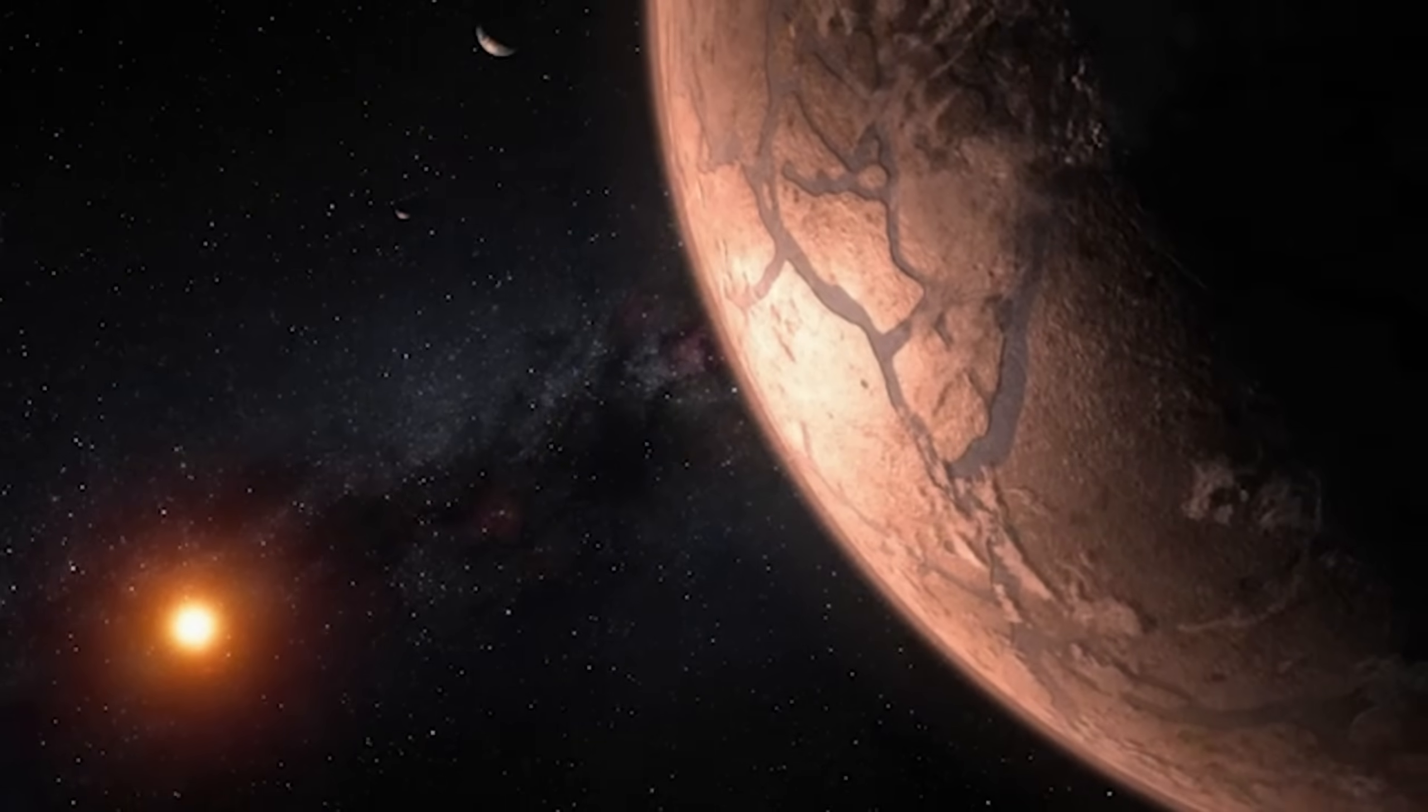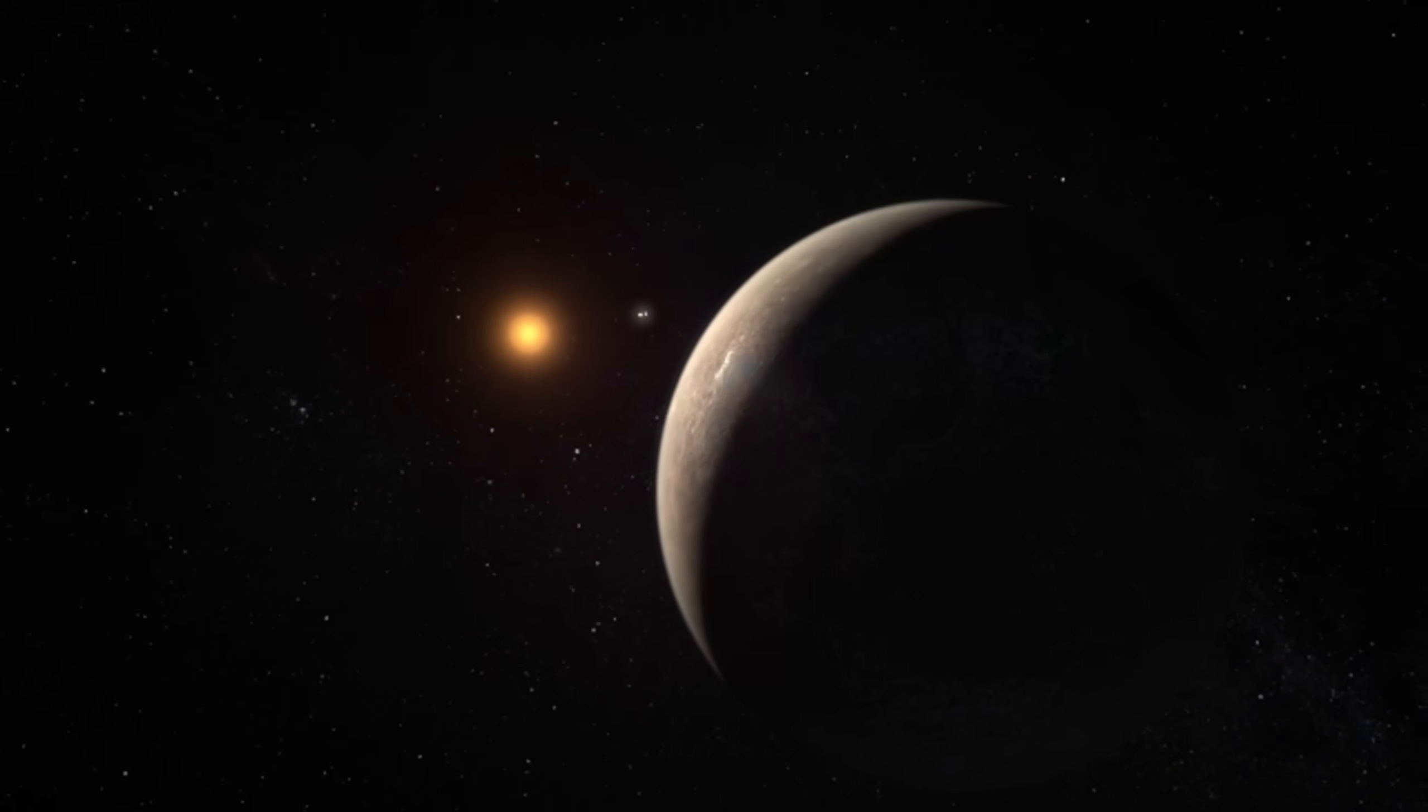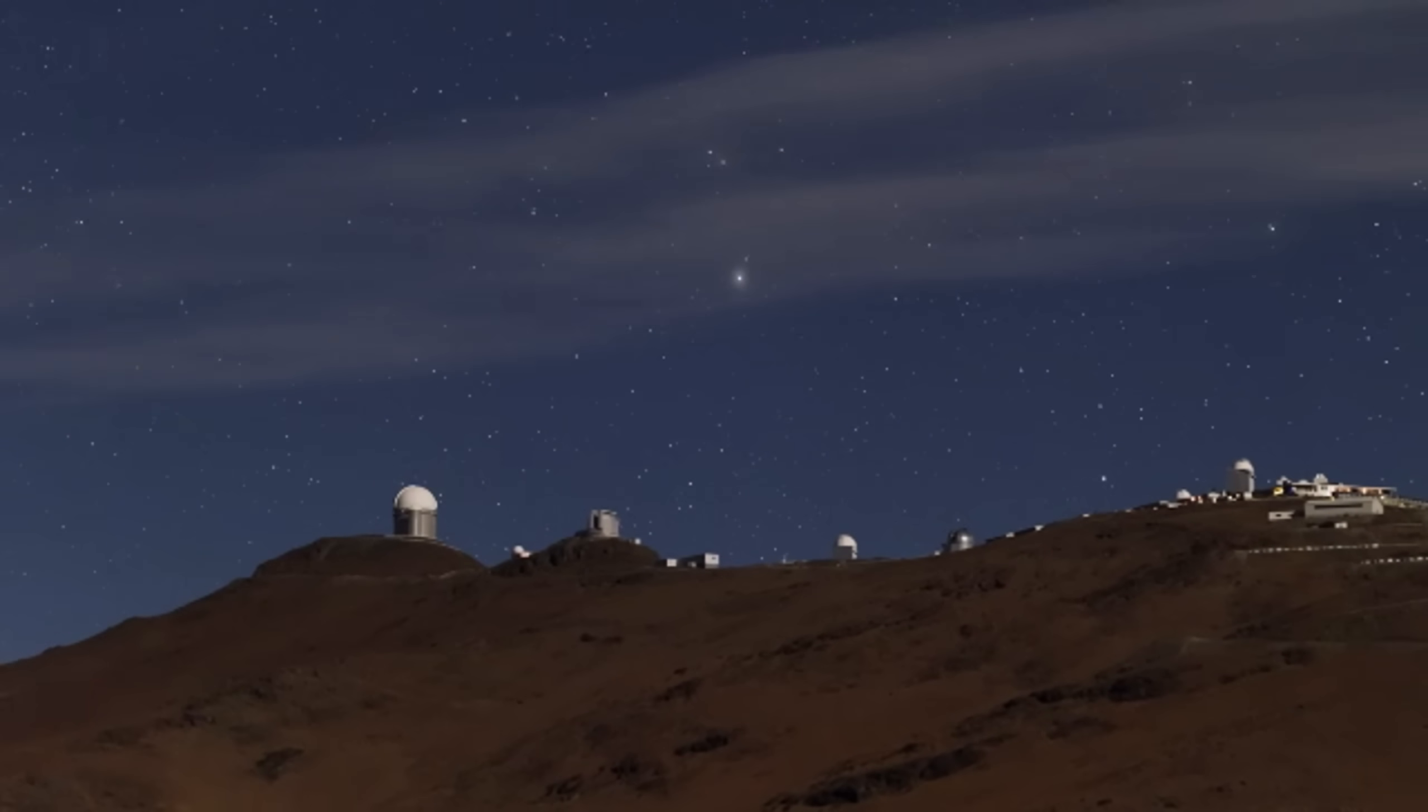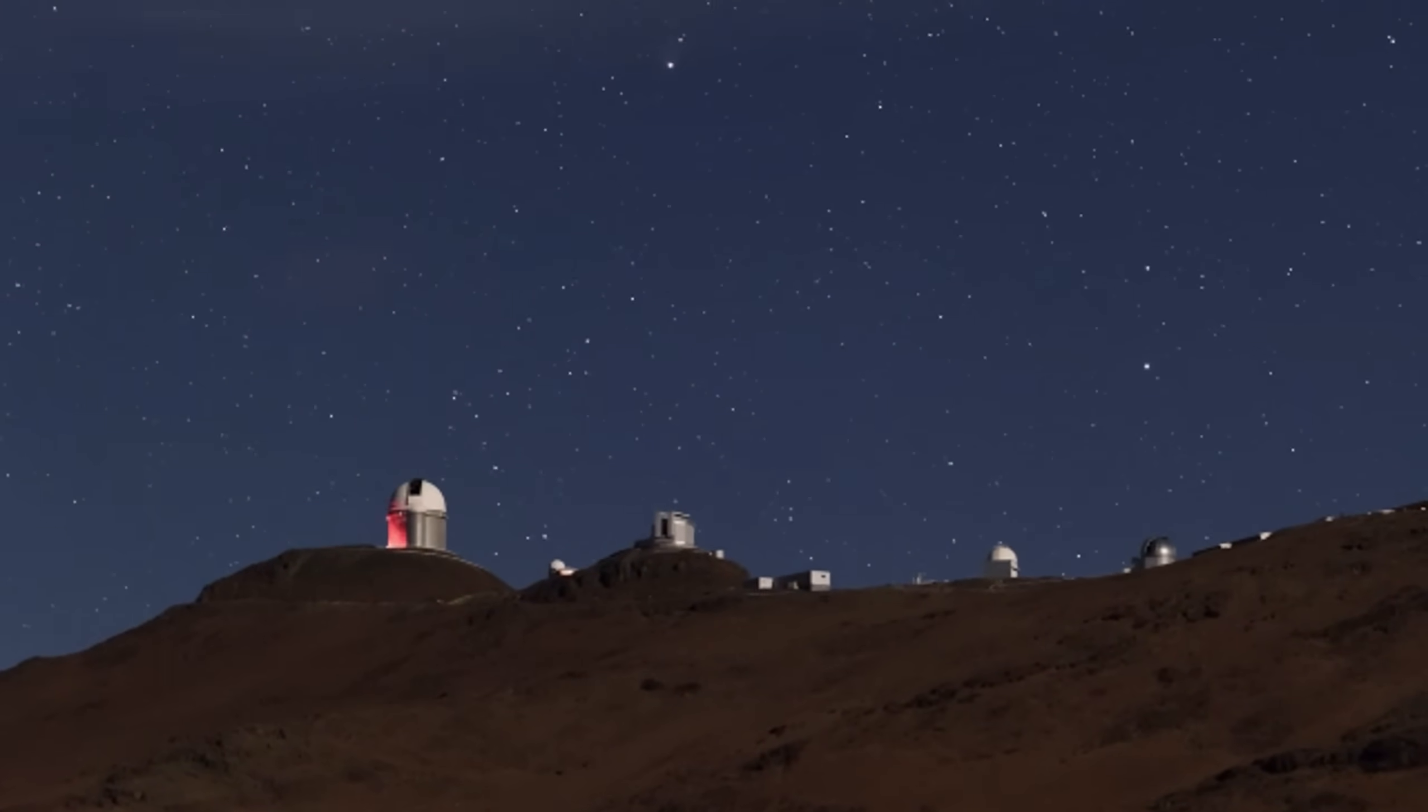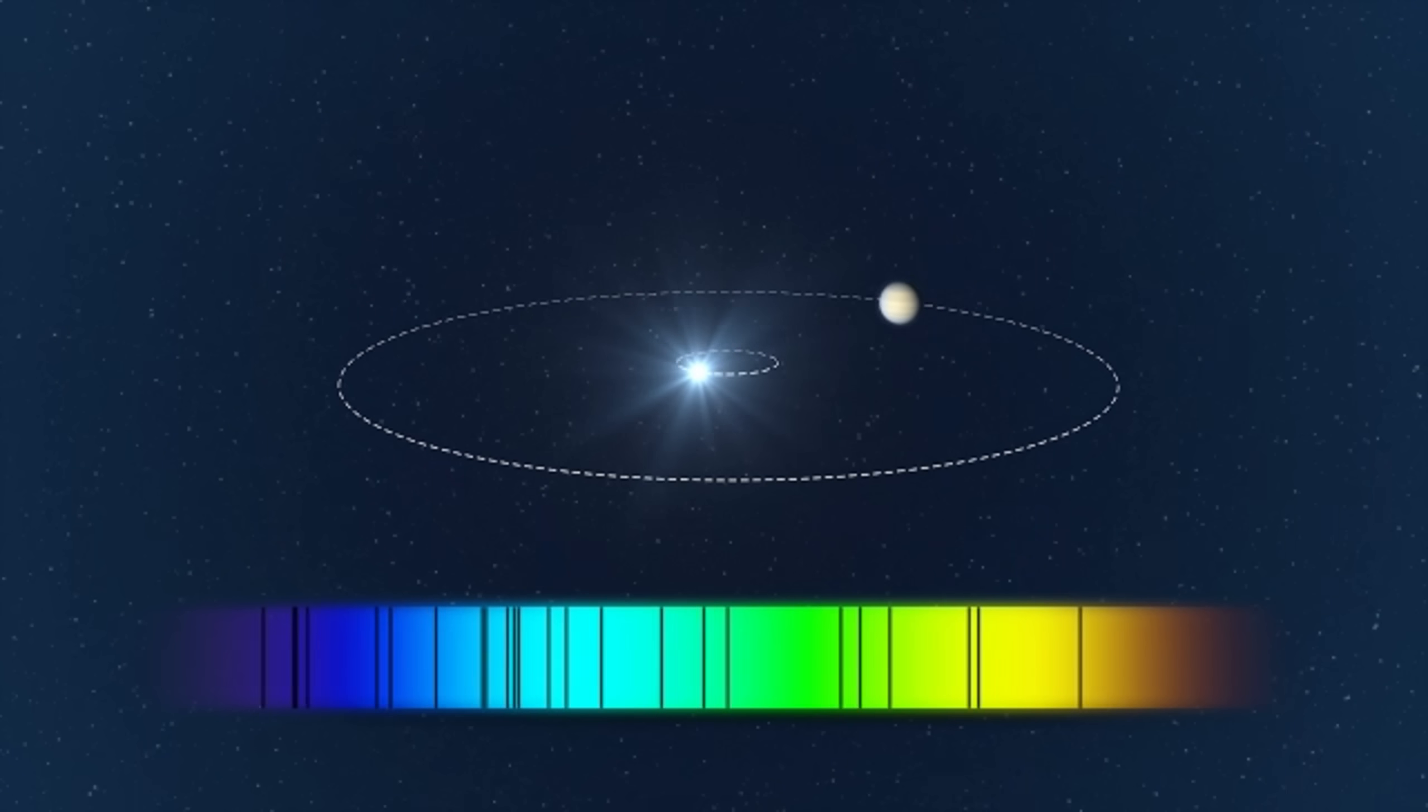Launched on December 18th, 2021, the James Webb Space Telescope is the most powerful and advanced space telescope ever built. A joint project by NASA, the European Space Agency, and the Canadian Space Agency, the James Webb Telescope is designed to explore the universe in infrared wavelengths, providing unprecedented clarity and sensitivity. Equipped with a 6.5 meter primary mirror, the telescope is positioned at the second Lagrange point, allowing it to observe the cosmos with minimal interference from Earth's atmosphere.